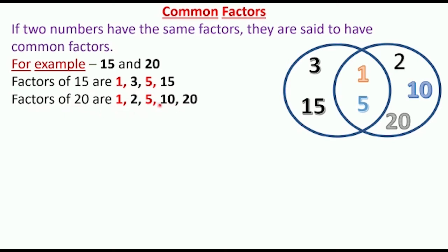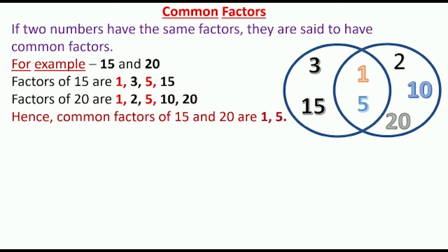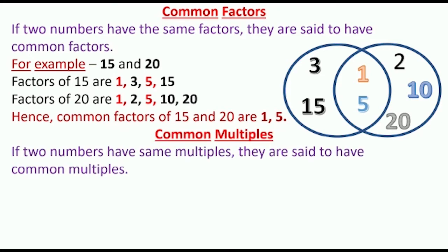Here you can see only 2 factors are common, that is 1 and 5. So the common factors of 15 and 20 are 1 and 5.